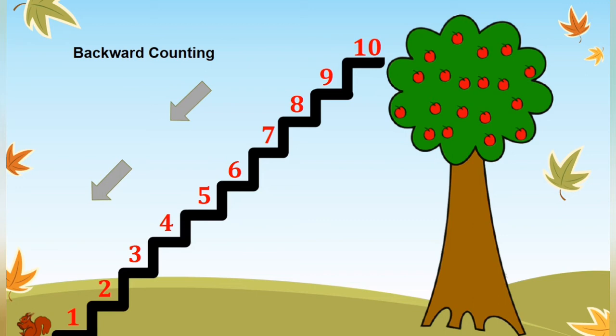When we count backwards, we take away 1 from each number. When we count backwards, number is small in value. For example, 9 is 1 less than 10. 8 is 1 less than 9. 7 is 1 less than 8, and so on.